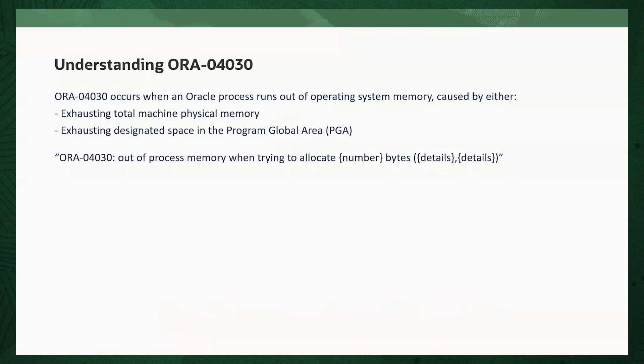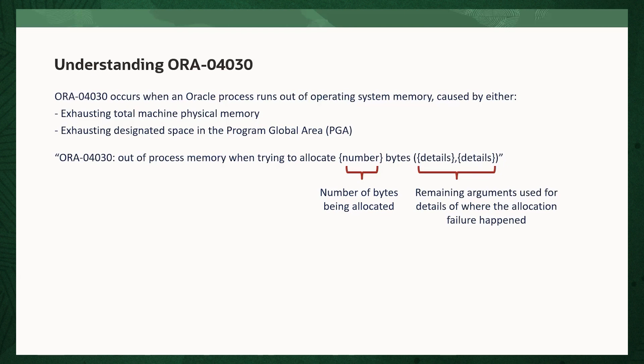The ORA-4030 error occurs when an Oracle process runs out of operating system memory. This can be caused by either exhausting total machine memory — that is, there isn't enough physical RAM on the machine — or exhausting designated space in the Program Global Area, known as the PGA. The error message will show you how much memory the process tried to allocate, provide details of where the allocation failure happened, and the error can occur in either a client or database process.